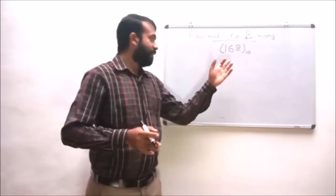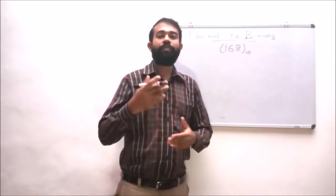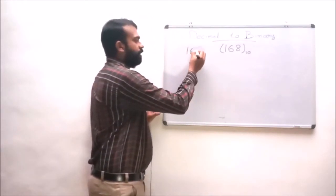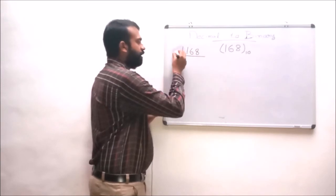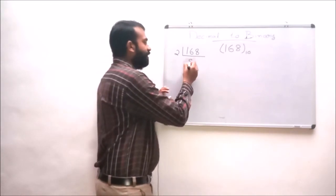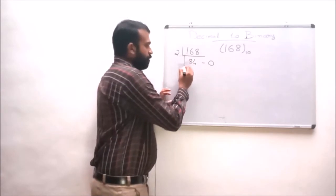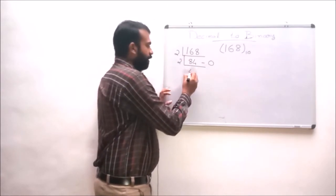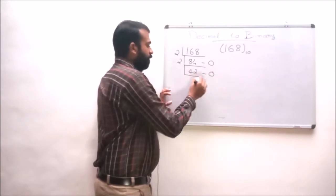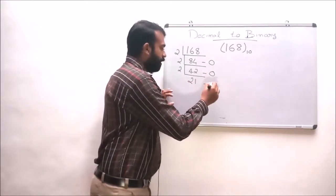Let us consider another example: convert 168 to base 10 into its binary equivalent. Dividing 168 by 2 gives 84 with a remainder of 0. Dividing 84 by 2 gives 42 with a remainder of 0. Dividing 42 by 2 gives 21 with a remainder of 0.